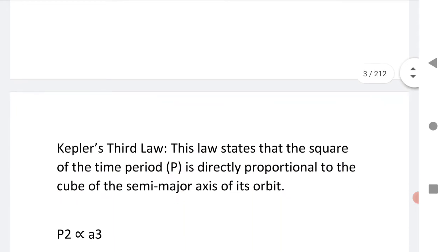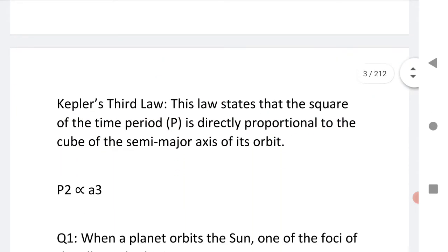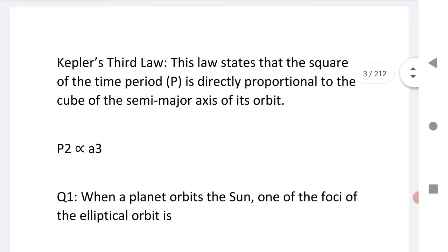Let us see the last law, that is the third law. Kepler's law states that the square of time period is directly proportional to the cube of the semi-major axis of its orbit. That is P square is directly proportional to A cube. This is the third law of Kepler's.